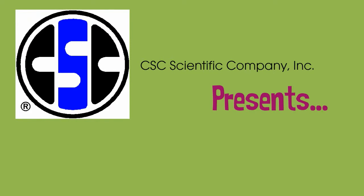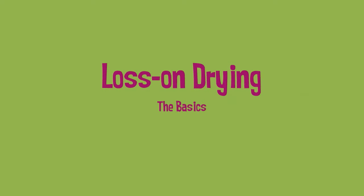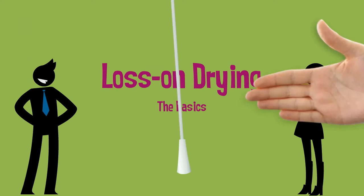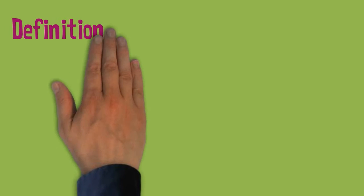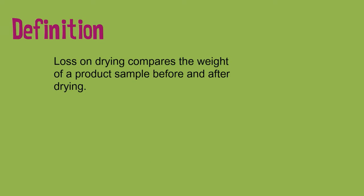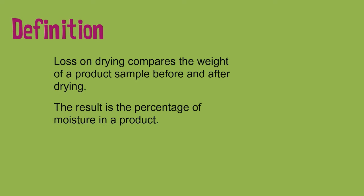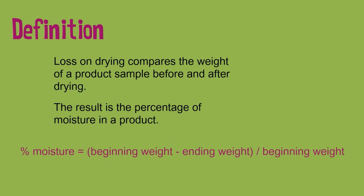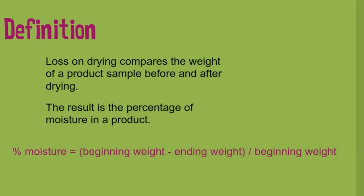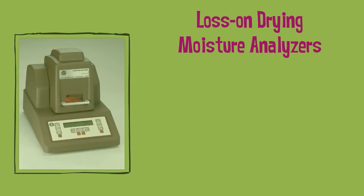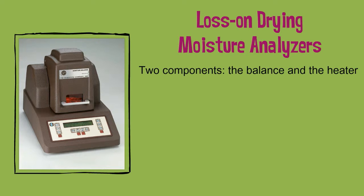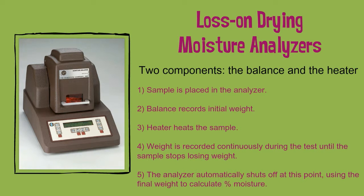Historically, laboratory ovens have been used to determine moisture content. The weight of samples before and after drying — sometimes as long as 12 hours — are compared and the percent moisture content calculated. This method is known as loss on drying, or LOD for short. The integrated moisture analyzer was developed to perform LOD testing in much shorter times: minutes, not hours.